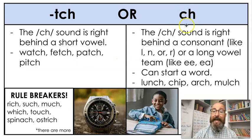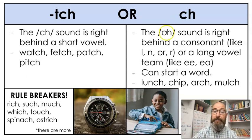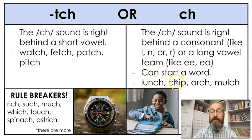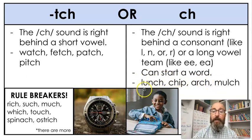If it's just C-H, the ch sound comes right behind a consonant — like an L, an N, or an R — or a long vowel team, like E-E or E-A. And C-H can start a word, but T-C-H cannot. Look at some examples: lunch, chip, arch, mulch. You can see in the word lunch — L-U-N-C-H — that's obviously spelled C-H.